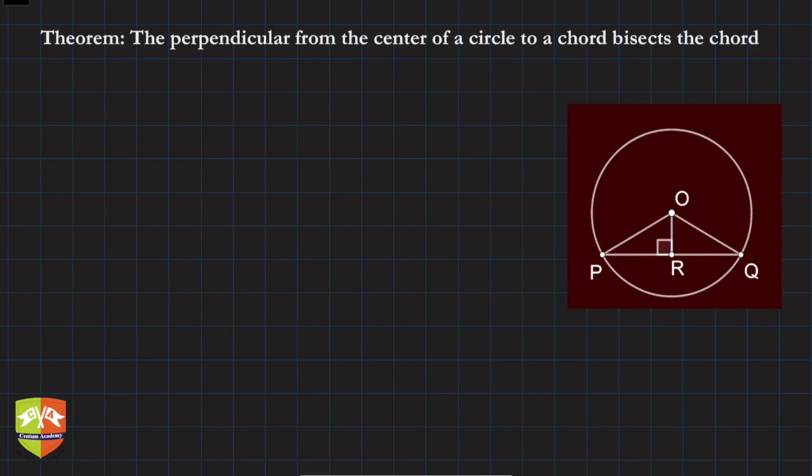You have to prove that PR is equal to RQ. That's what this word bisect means.